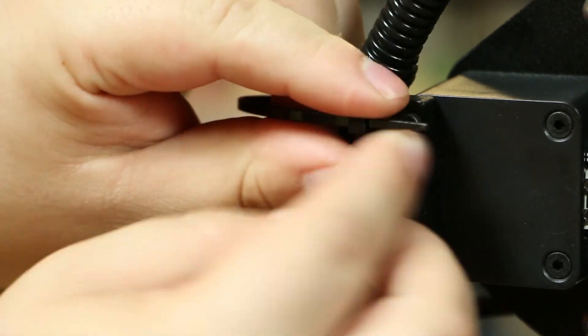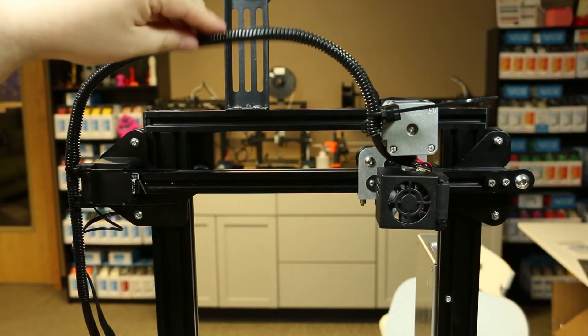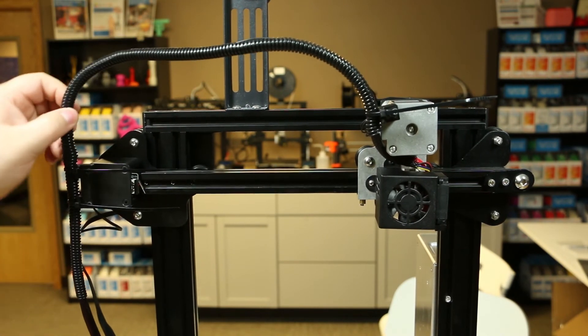Now, loosely zip tie the cable making sure it has enough room on both sides. Once you are confident in your spacing, tighten the zip ties and test to make sure the spacing is still correct.